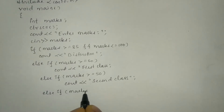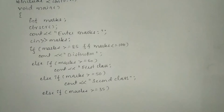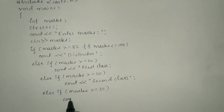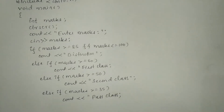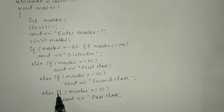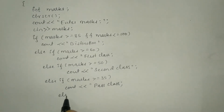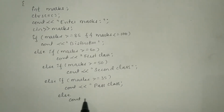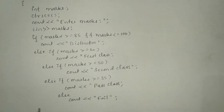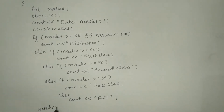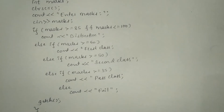If the second class condition is also not true, we check else if marks is greater than or equal to 35. If it is true, then it has to print 'pass class' using cout. If even this condition is not true, the default else part executes: cout with stream insertion operator prints 'fail' and a semicolon. Finally, I am going to write the getch() function and the closing curly brace for the main function.